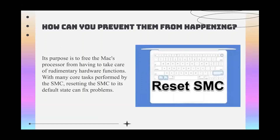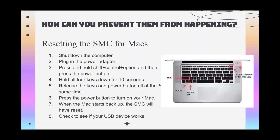The SMC's purpose is to free the Mac's processor from having to take care of rudimentary hardware functions. Resetting the SMC to its default state can fix problems. To reset the SMC: shut down the computer, plug in the power adapter, then press and hold Shift, Control, Option, and the Power button. Hold all four keys down for 10 seconds, then release all keys and the power button at the same time. Press the power button to turn on your Mac. When the Mac starts back up, the SMC will have reset — check to see if your USB device works.